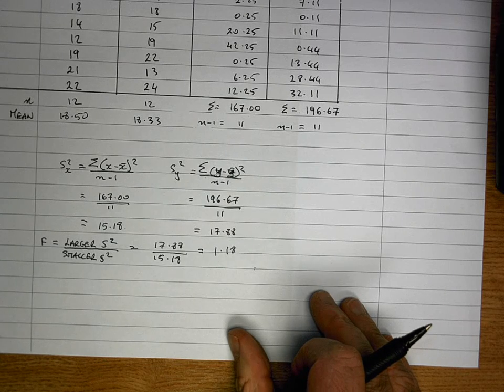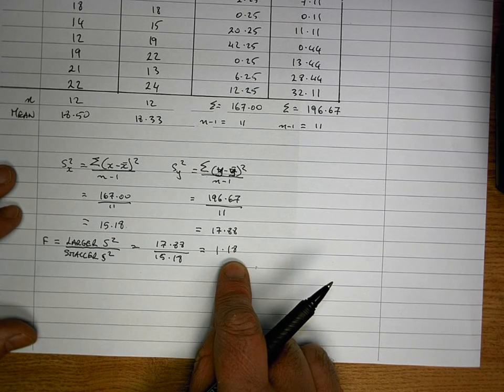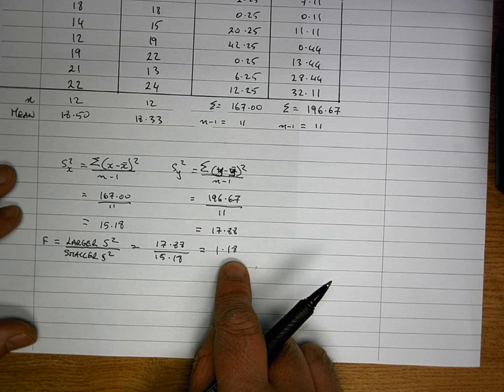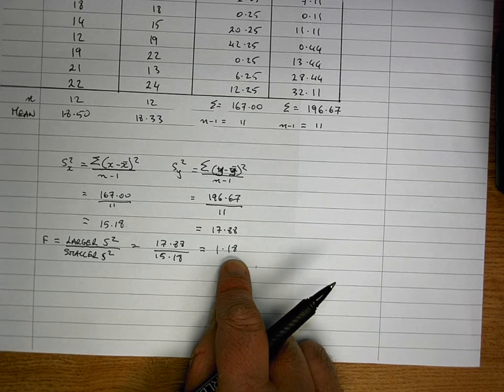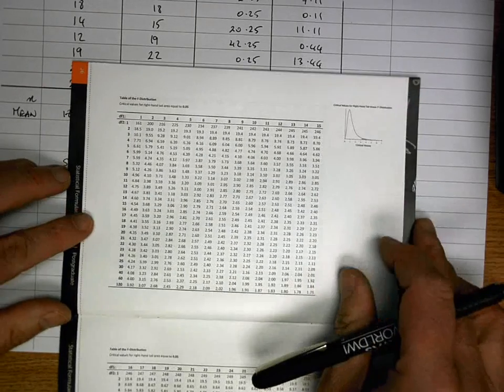So now I've got an F statistic. So an F statistic that I need to compare to see if that's significant enough to tell me if there's a difference between the two variances. So to do this I need to use an F distribution table. So I'll use one here.